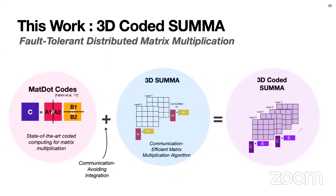This work is about 3D Coded SUMMA, which combines MatDot codes — the state-of-the-art coded computing technique for matrix multiplication — and 3D SUMMA, which is a widely used communication-efficient parallel matrix multiplication algorithm. We integrate these in a very communication-efficient fashion to build the 3D Coded SUMMA algorithm. Let me go over each of these components one by one, and then talk about how we combine them.